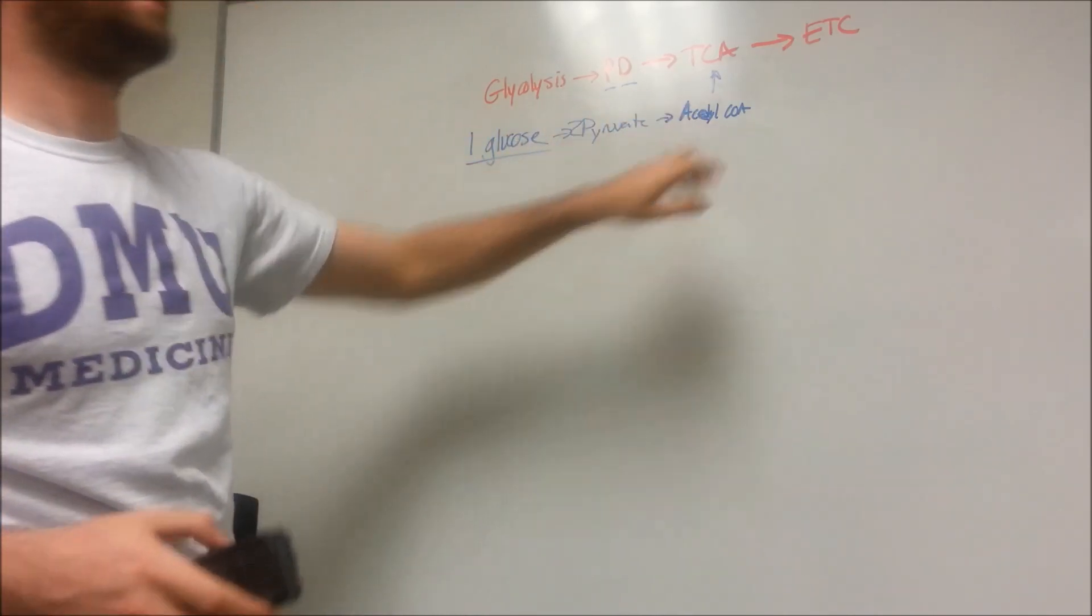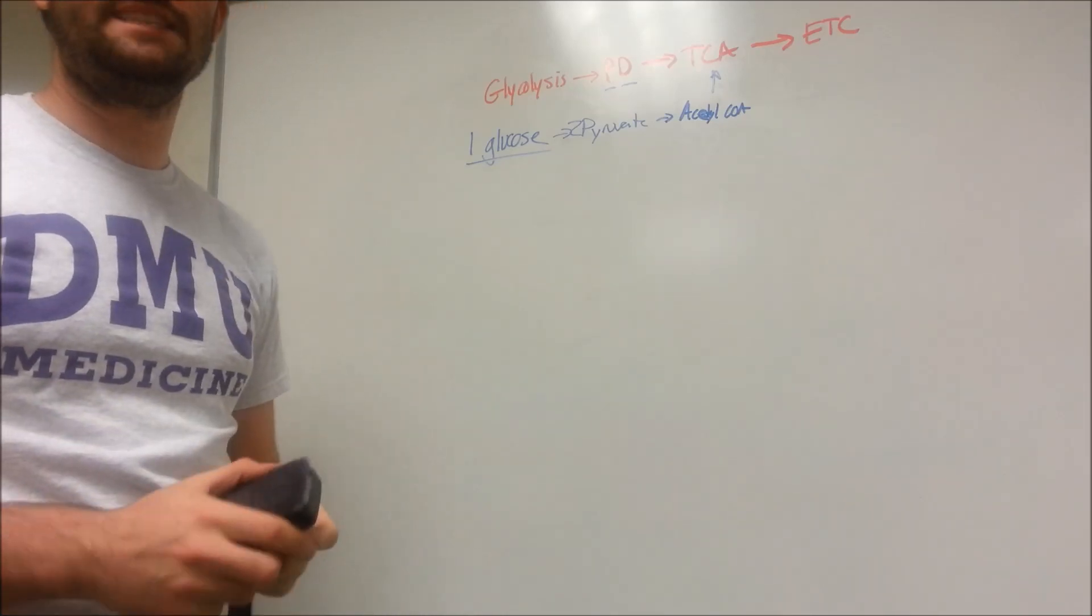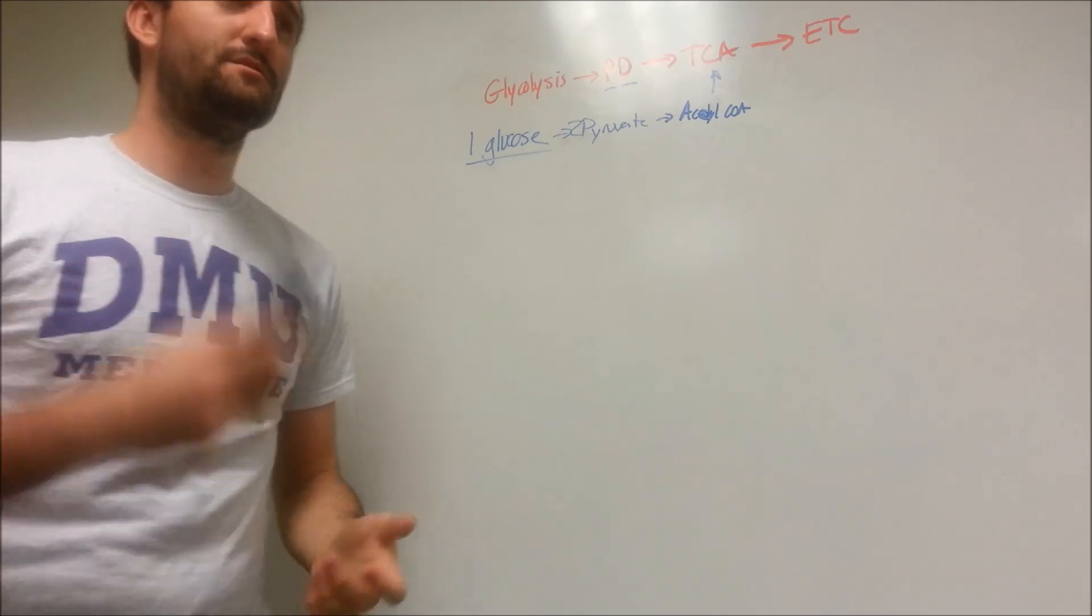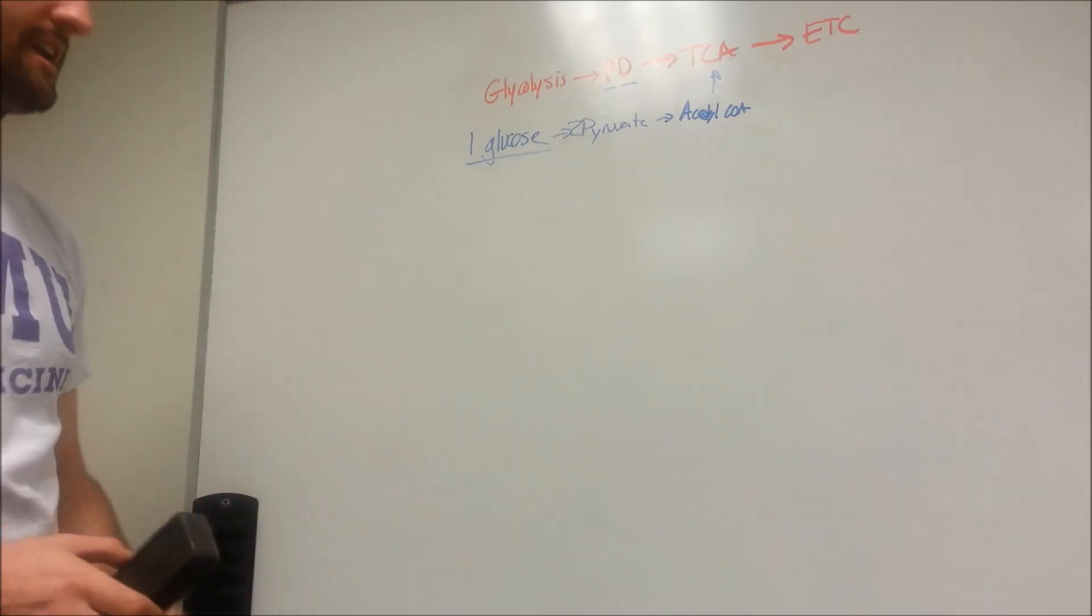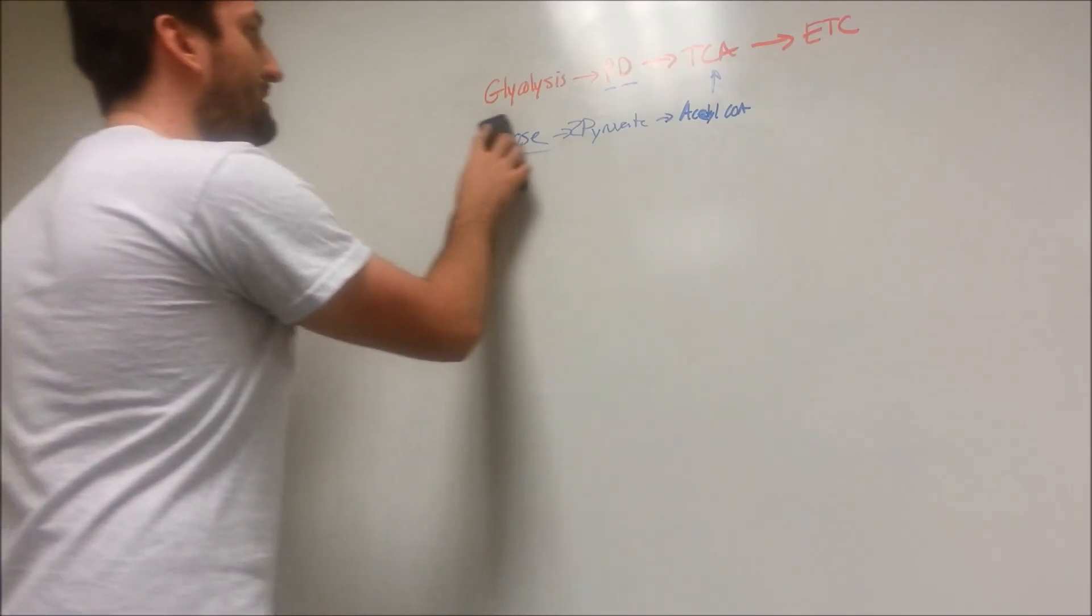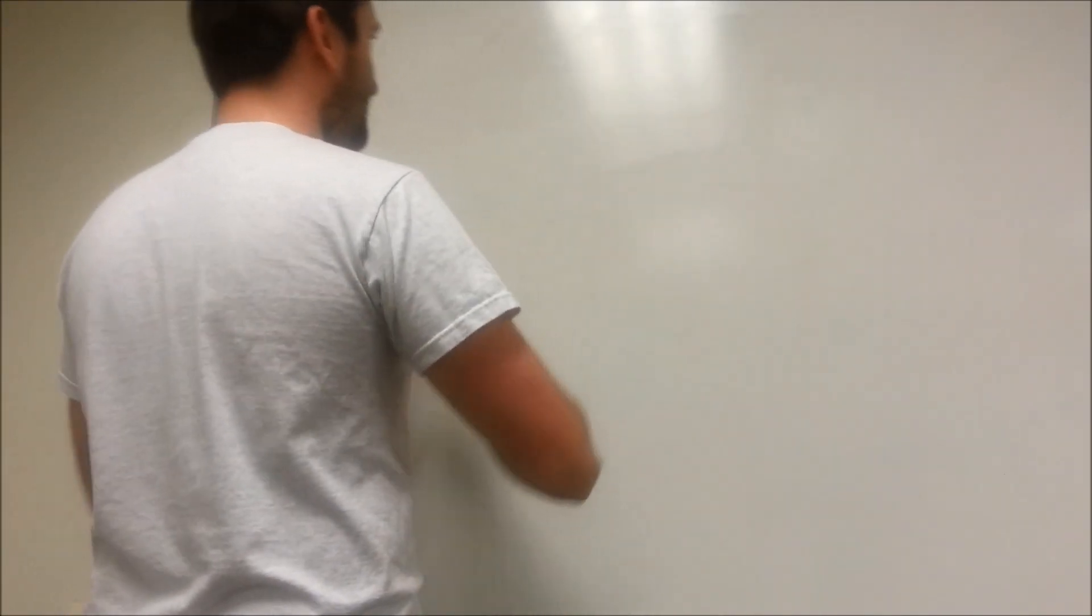TCA cycle. What else is it called? It's also known as the Krebs cycle. TCA stands for tricarboxylic acid cycle. Also, it's known as the citric acid cycle. All the same thing. Let's dive into it.